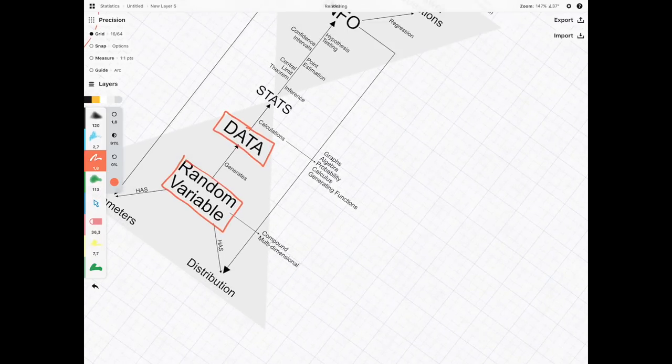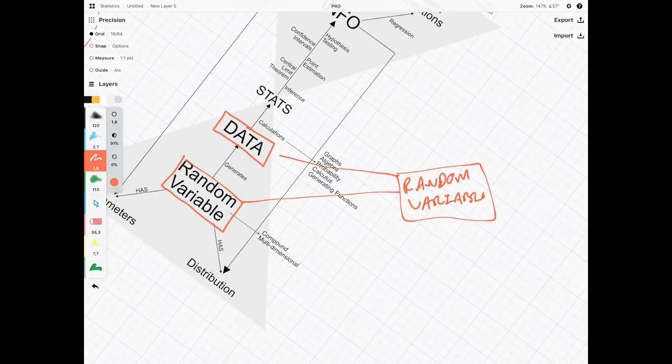However, in this course what we're going to see is that data can come from multiple random variables, and this does make the math a little bit more complicated because these random variables also have their own set of parameters and distributions. What we're going to be trying to do in this course is seeing that we can combine the distributions together.